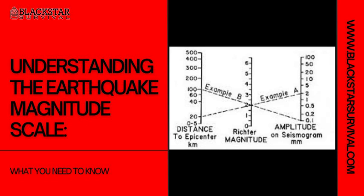Earthquakes are categorized by their magnitudes as follows: Minor, less than 3.0, generally not felt but recorded. Light, 3.0 to 3.9, often felt but rarely causes damage. Moderate, 4.0 to 4.9, can cause noticeable shaking and minor damage. Large, 5.0 to 5.9, can cause significant damage to buildings and infrastructure. Major, 6.0 to 6.9, can cause severe damage in populated areas. Great, 7.0 and higher, can cause widespread, catastrophic damage. Understanding these levels helps in assessing the potential impacts on property, human safety, and the economy.